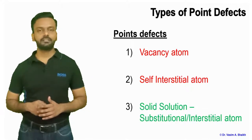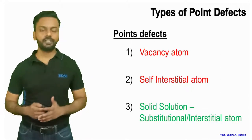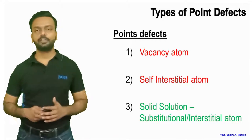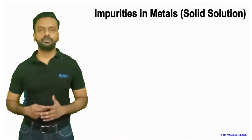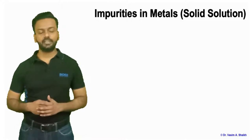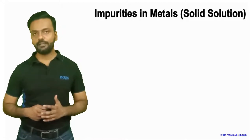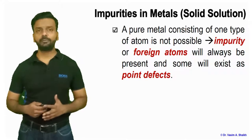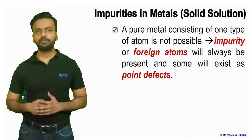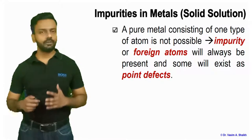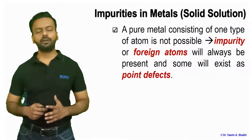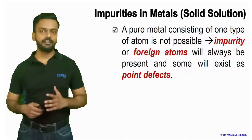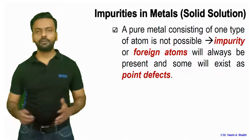Let us see what solid solutions are, how they are formed, and what are the rules for forming them. There are a lot of impurities in atoms and you cannot avoid the formation of these impurities. A pure metal consisting of one type of atom is not possible — there will always be some foreign atoms in the material as point defects.